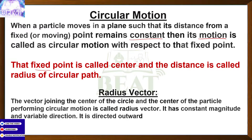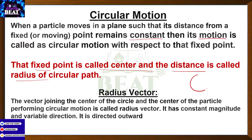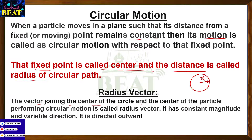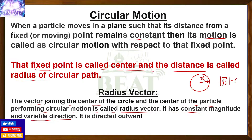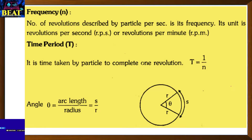The fixed point about which the motion is happening is called the center of motion. The fixed distance from the center is called the radius of the circular path. The radius vector is the vector joining the center of the circle and the particle performing circular motion. It has a constant magnitude but variable direction — because the direction keeps changing continuously, the vector itself is not constant.